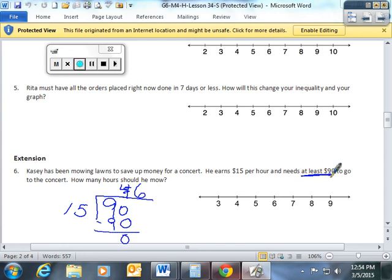But he needs at least $90. So, he definitely, he could work six hours. Because six hours would give him exactly 90. And then he could go greater than six hours. Because, hey, the more money, the better.